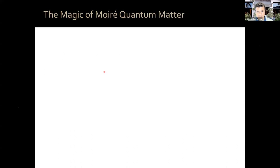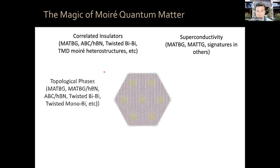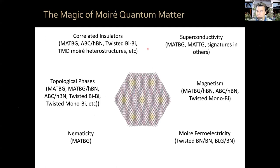In this moiré quantum matter, we have now observed many of the phases of condensed matter physics, often with particular twists — nice differences with respect to other materials and other platforms. Superconductivity is one of those that has attracted most attention, initially seen in magic angle twisted bilayer graphene, and then more recently magic angle trilayer graphene; there are signatures in other systems too.